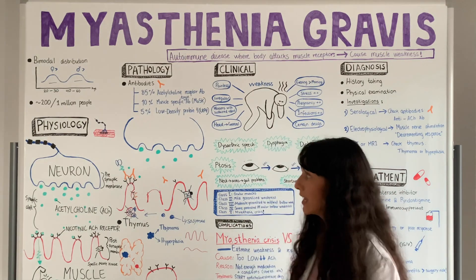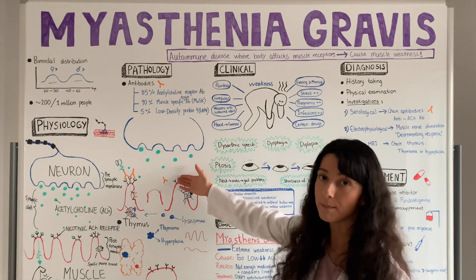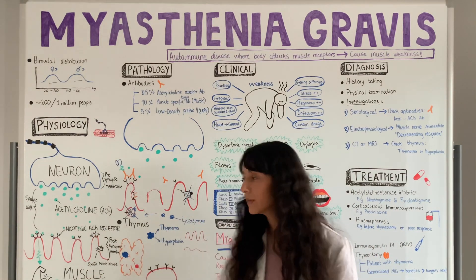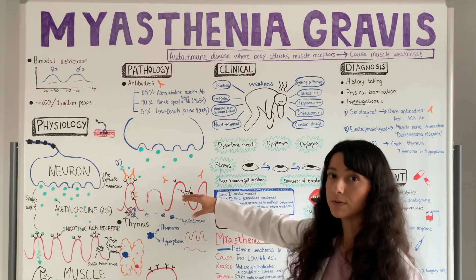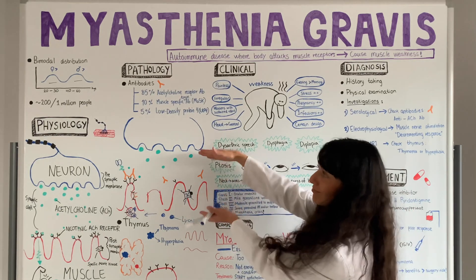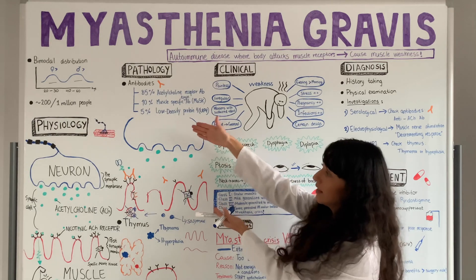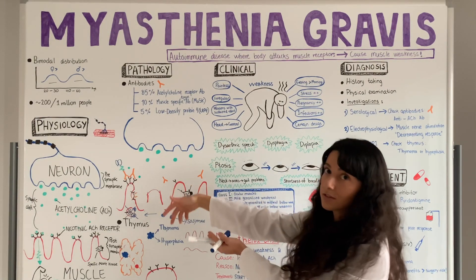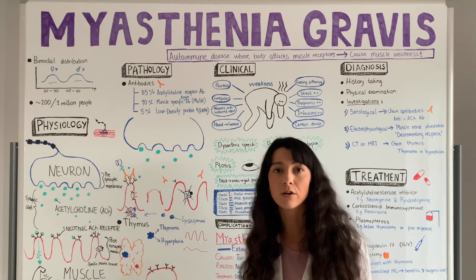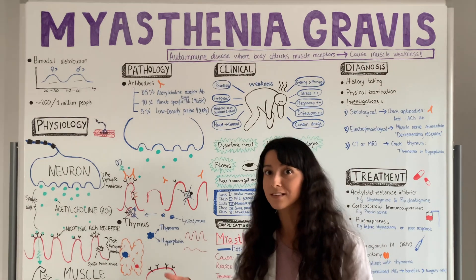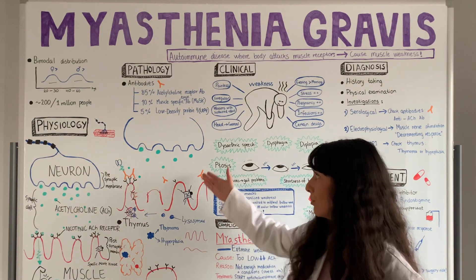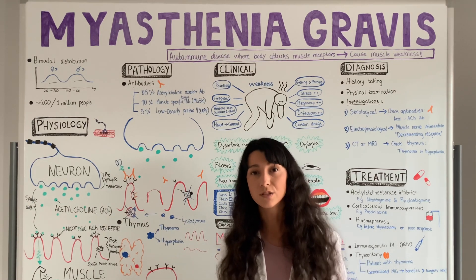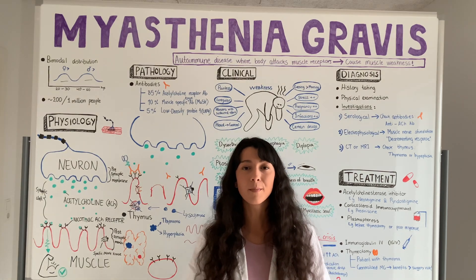With fewer receptors, acetylcholine cannot come and bind, so muscle contraction cannot occur. As the membrane becomes more flat over time, there is increased distance between the neuron and the muscle, making it harder for neurotransmitters to reach the receptors. The reduced total surface area means even fewer receptors are available. It will be harder for neurotransmitters to bind and cause a muscle contraction — and that's why we see muscle weakness in myasthenia gravis patients.